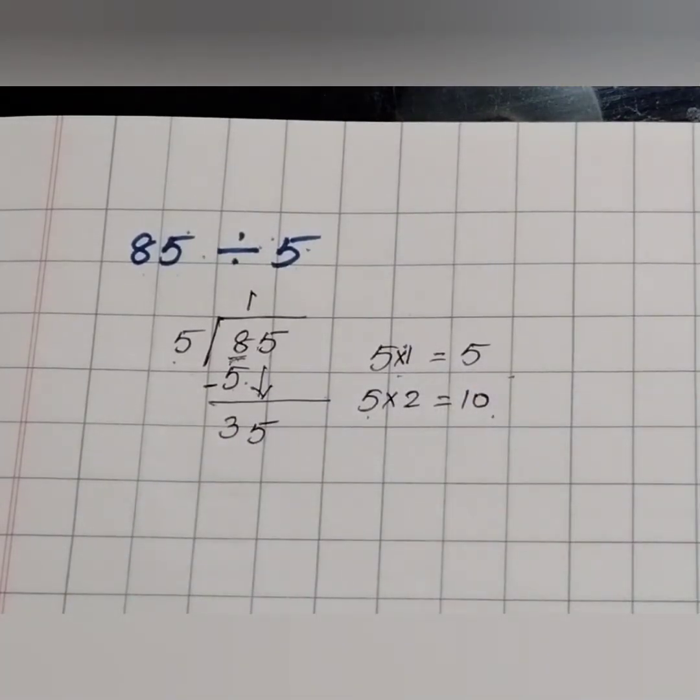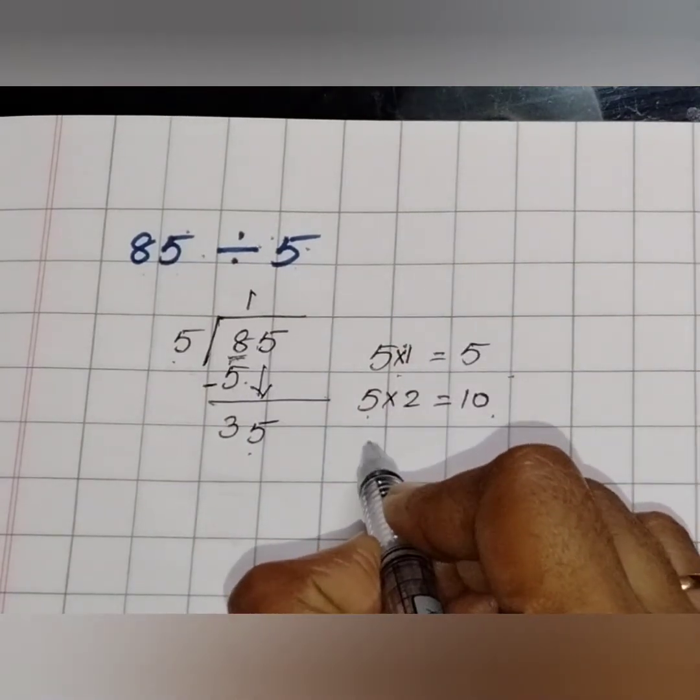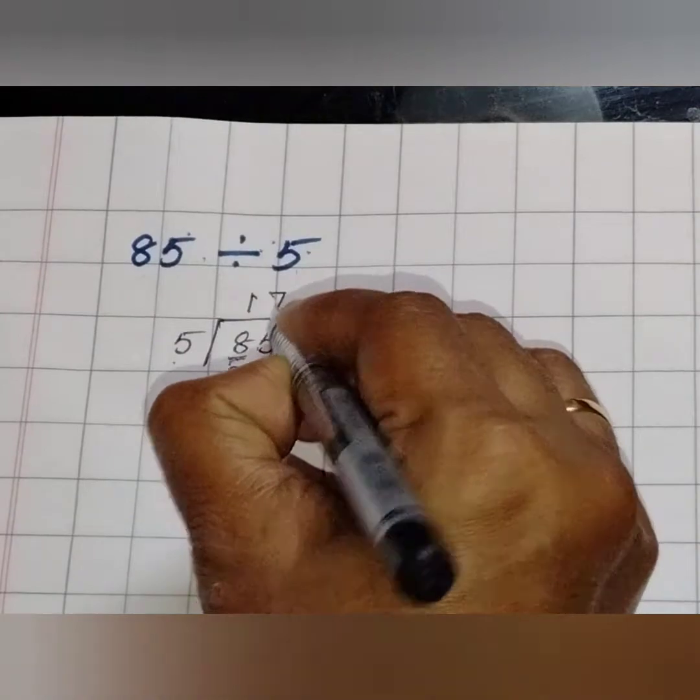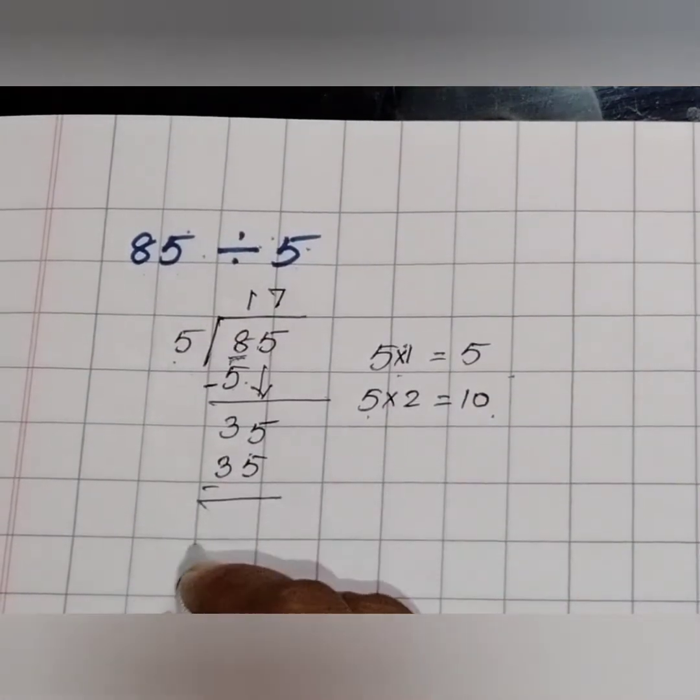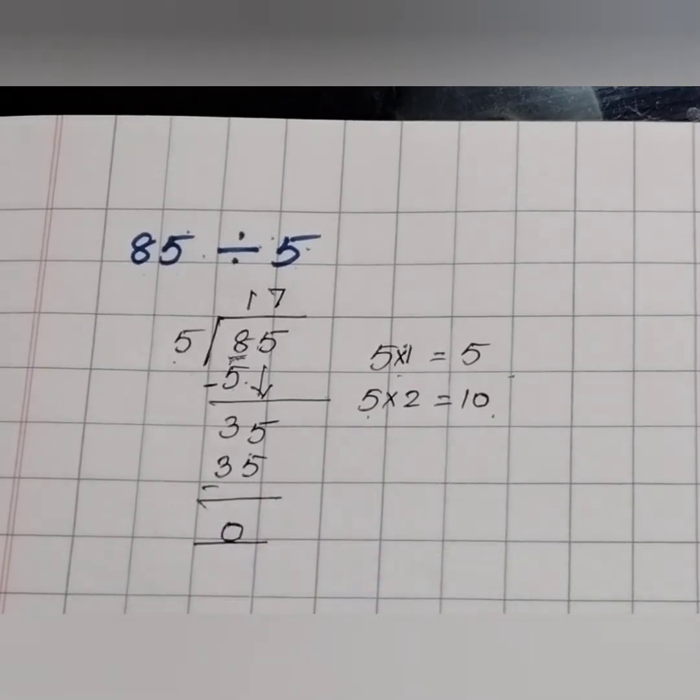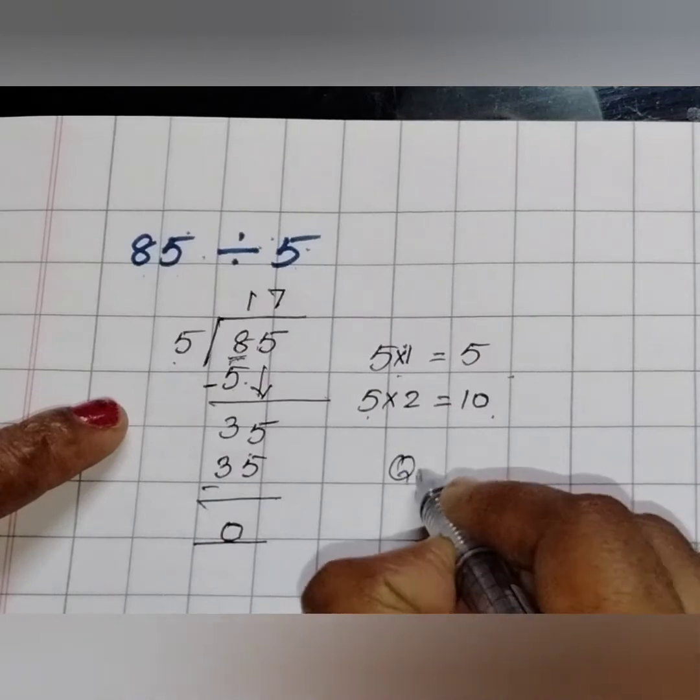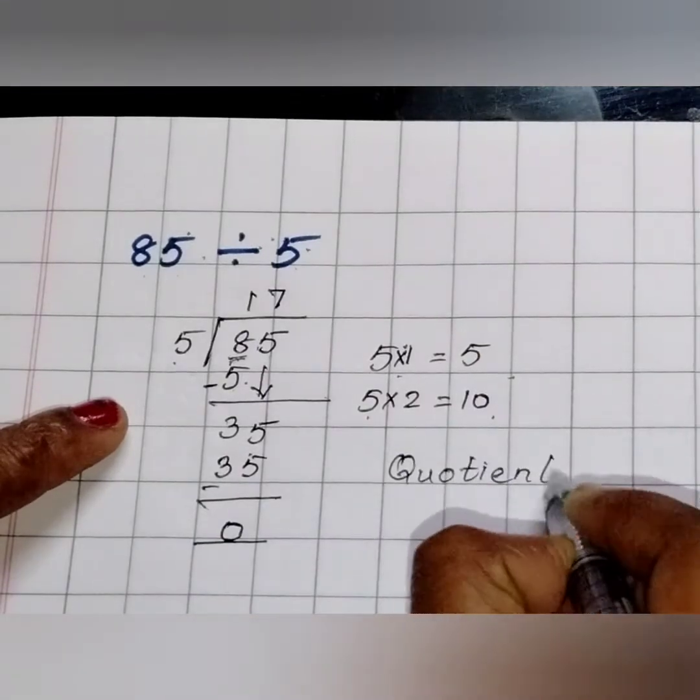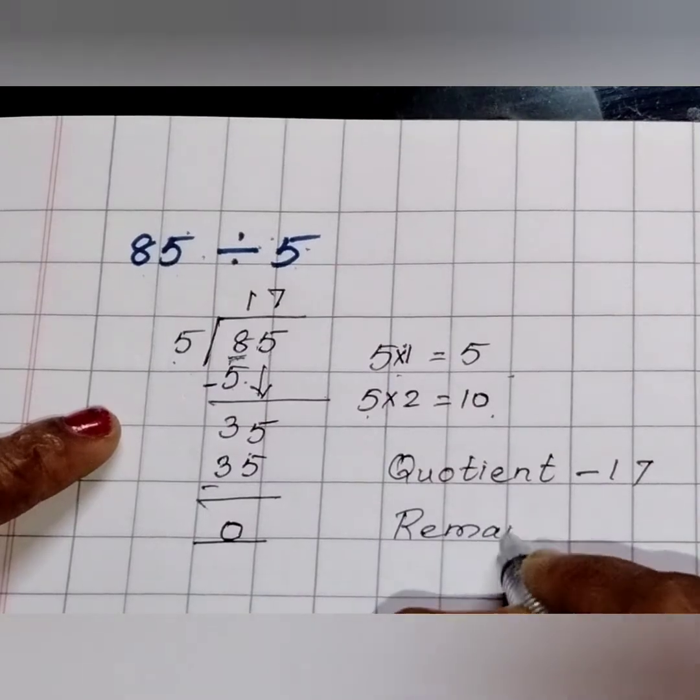Now it became 35. When 35 comes in 5's table, 5 sevens are 35. 35 minus 35 is 0. What is our quotient? And remainder. Yes.